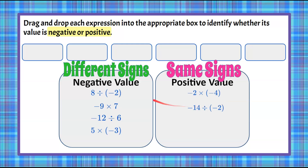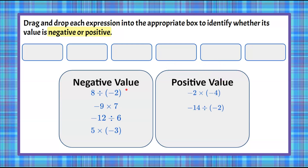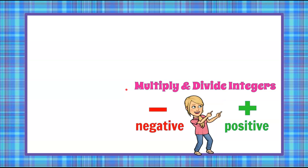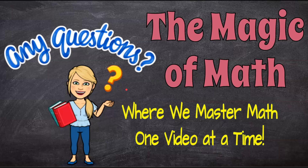So there you have it. Same signs: positive quotient or product. Different signs: negative product or quotient. And those are our rules for multiplying and dividing positive and negative numbers. I thank you for joining me here today at The Magic of Math, where we continue to master math one video at a time. I hope you'll come back soon — have a great day, I'll see you next time.